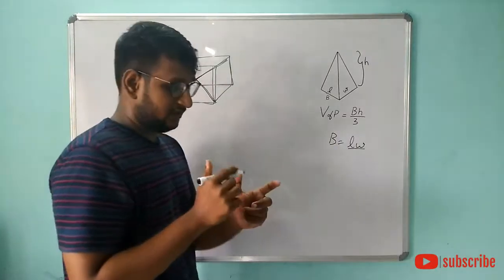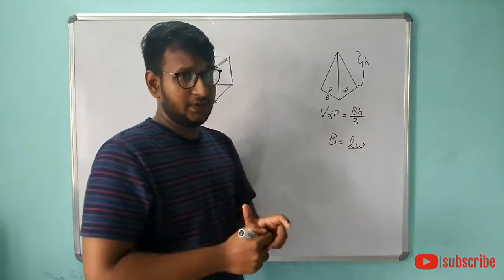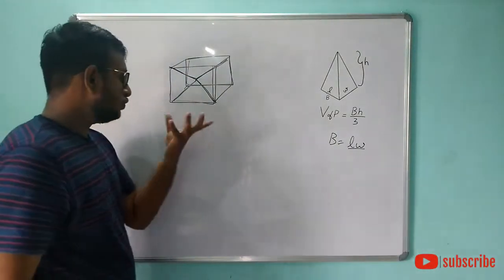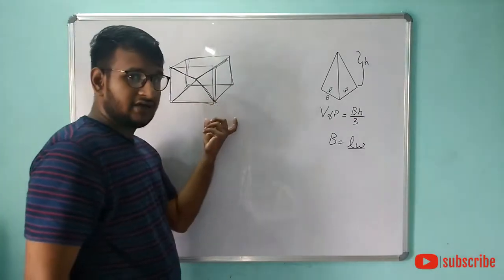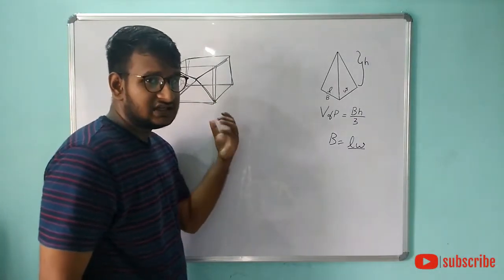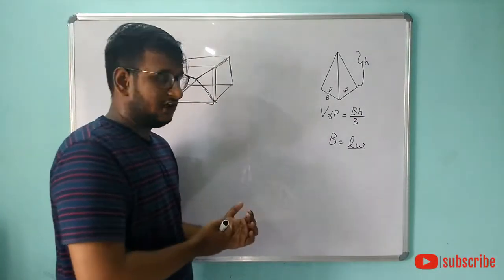We can form a cuboid using pyramids — fitting the left, right, front, back, top, and bottom sides. Using six pyramids in total, we can form a cuboid, and then divide the volume of that cuboid by 6 to get the volume of a single pyramid.